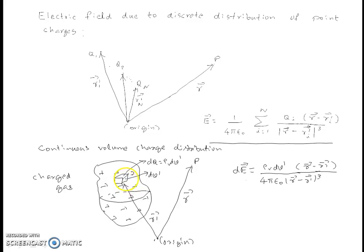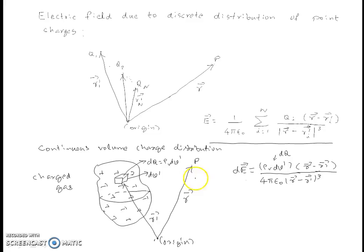Here, the charge dq is considered as a point charge — this is very important. This differential charge dq is treated as a point charge, so this is nothing but the electric field due to a point charge. To obtain the electric field at point P due to the entire volume charge distribution, we can integrate the above expression over the entire source distribution.